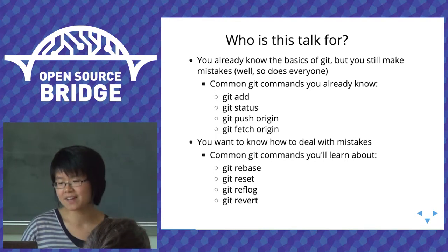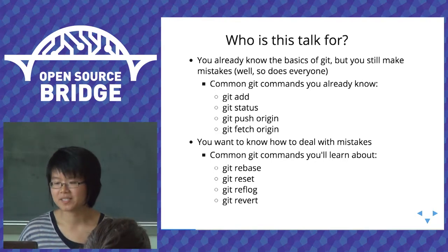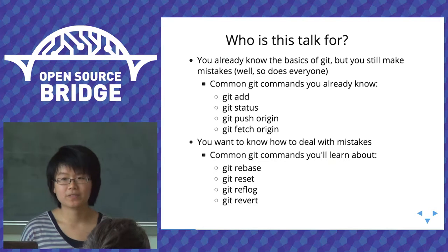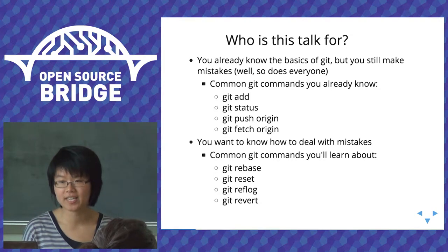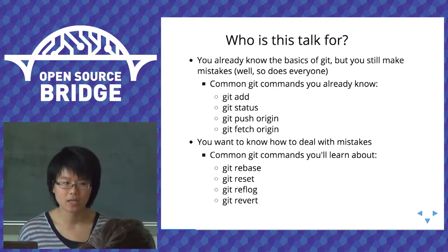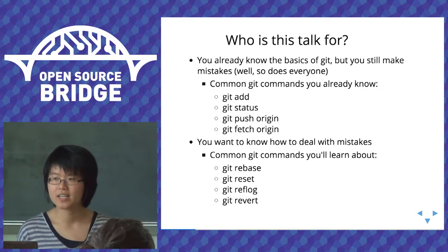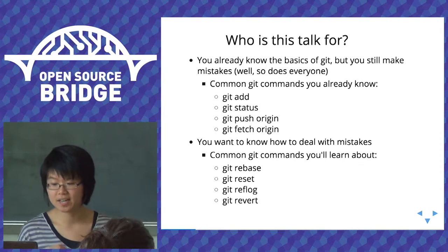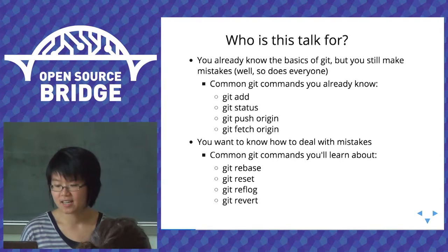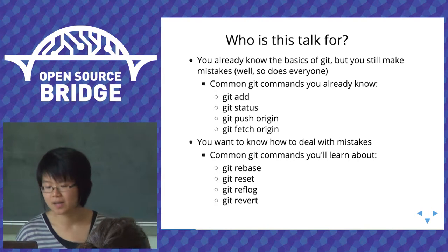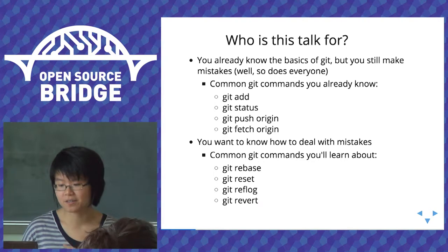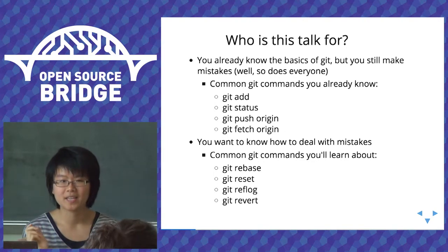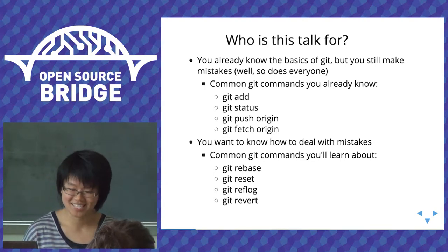I assume that after some weeks or months of learning Git, you're familiar with using Git add for staging files, checking the status of the working directory, pushing your branch to a remote repository, and fetching branches using Git fetch. By the end of this talk, I hope you'll get more familiar with dealing with mistakes in Git — specifically these four commonly used but often confused commands.